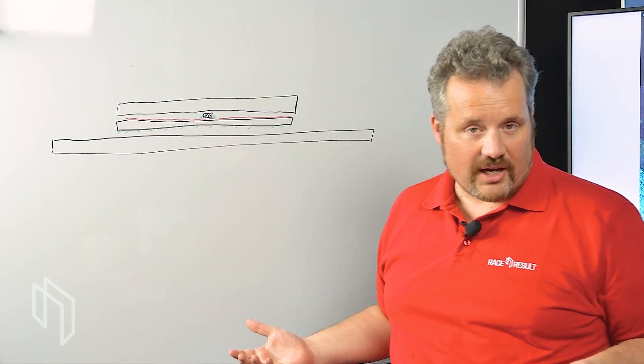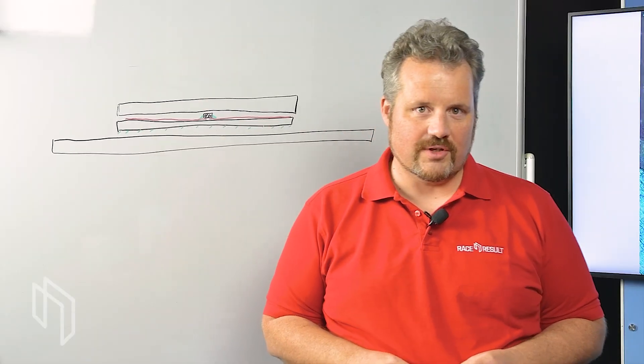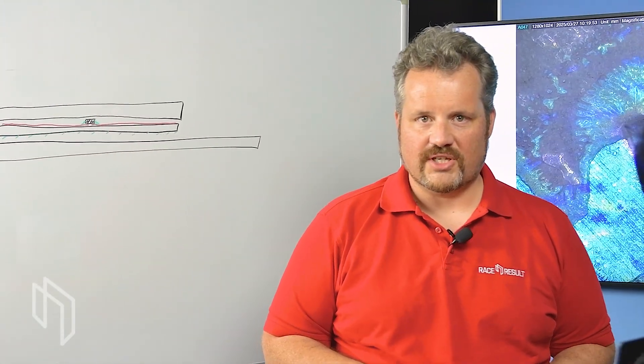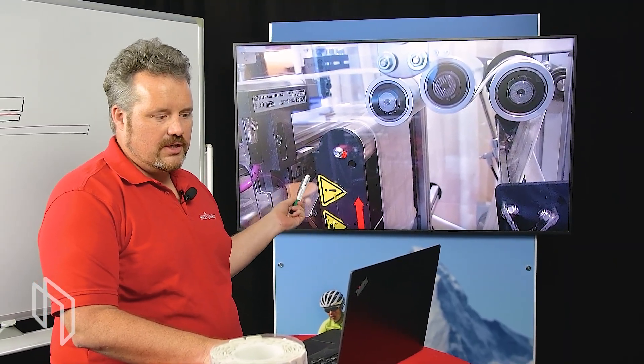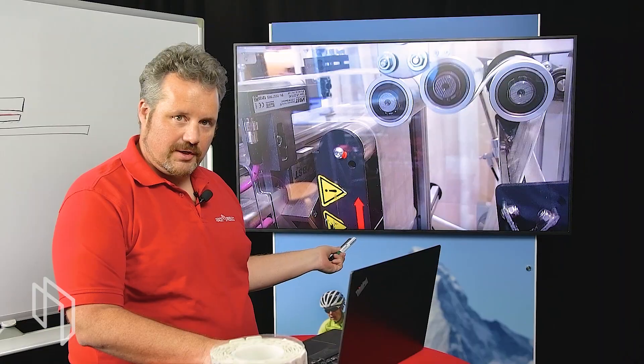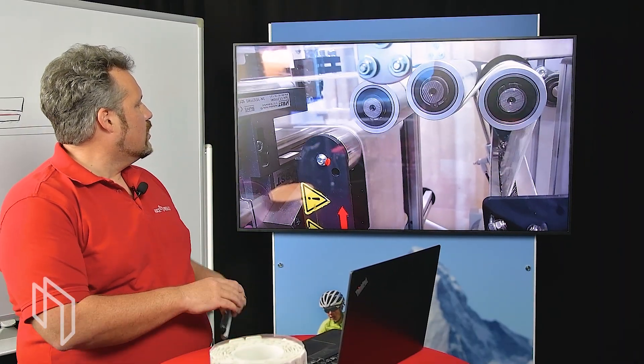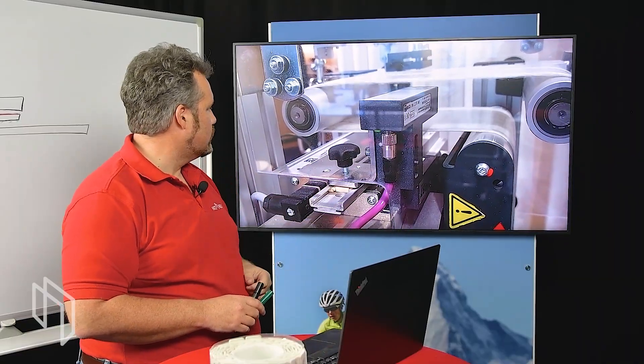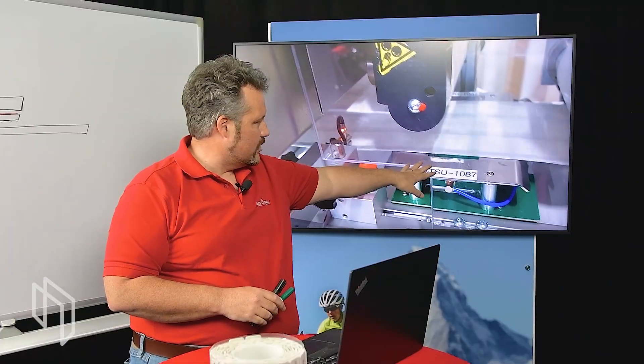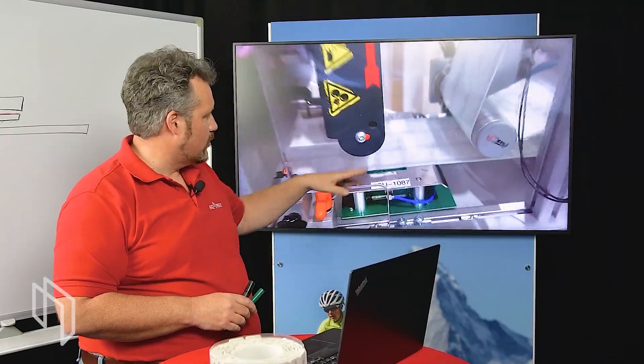Now I could just tell you this and you would have to believe me, but we have actually done some testing, and actually not only us but we had some external laboratories testing our chips. This here is a machine made to test passive transponders and especially test their robustness against bending. It just has a spool running in circles all the time with transponders on them running fairly quickly. Down here there is an antenna measuring the transponders performance all the time.